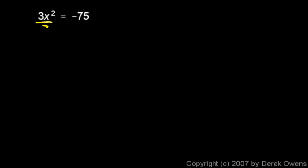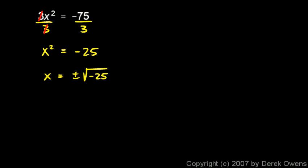We'll start off with this one, which is a relatively easy one: 3x² = -75. To solve for x we need to divide each side by 3. The 3 cancels on the left and the right, leaving us with x² = -25. Then we take the square root of each side, which leaves us with x on the left and on the right we have plus or minus the square root of negative 25.